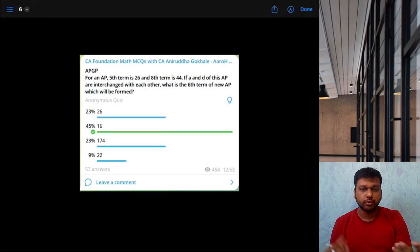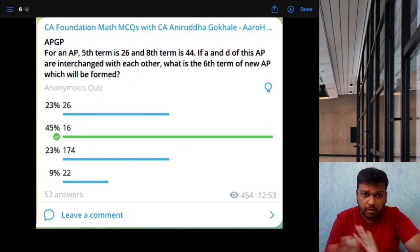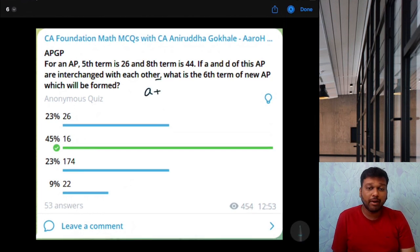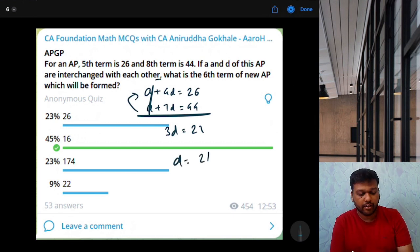For an AP, fifth term is 26, eighth term is 44. If a and d of this AP are interchanged with each other, what is the sixth term of new AP? Fifth term is a plus 4d, is 26. And a plus 7d is 44. Let's subtract first one from second one. So, 3d is equal to 44 minus 26, 18. So, d is going to be 18 by 3, that is 6.